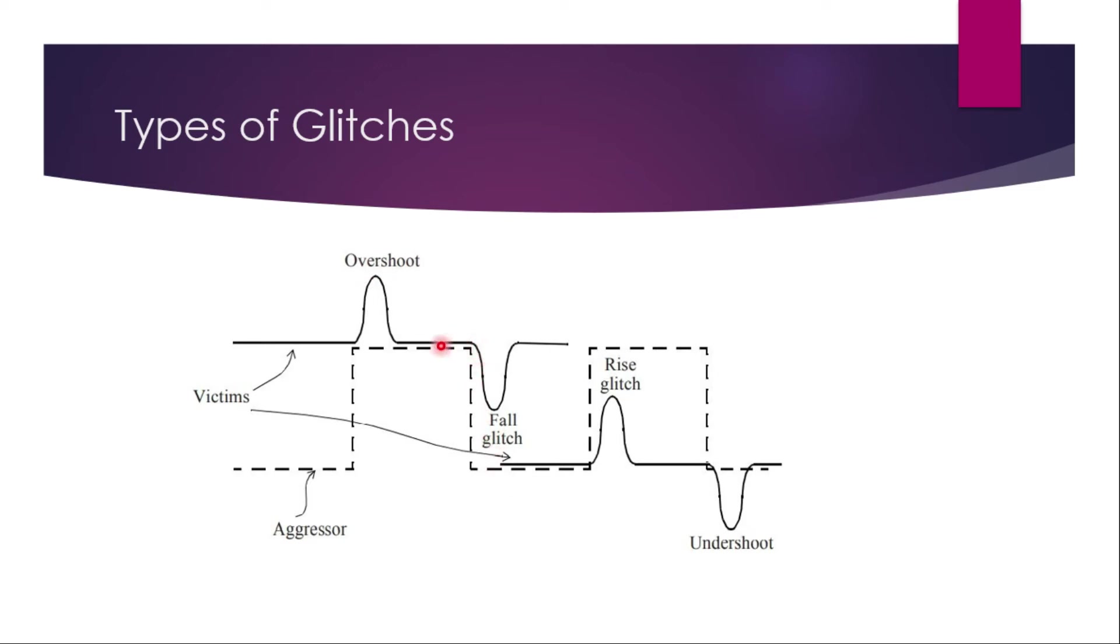When the aggressor is going low and victim is still high, then the victim will go below VDD or VSS by some amount and that is called fall glitch. When the aggressor is low and victim is high, the victim will rise from ground to some level from the ground, which is called rise glitch. When aggressor is low and the victim is low, the victim goes below VSS and it is called undershoot. So these are the types of glitches which are available.